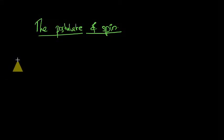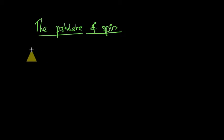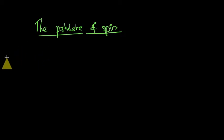In this video, I am going to talk about the postulate of spin. In 1926, Goudsmit and Uhlenbeck postulated that the electron possesses an intrinsic angular momentum called spin angular momentum.